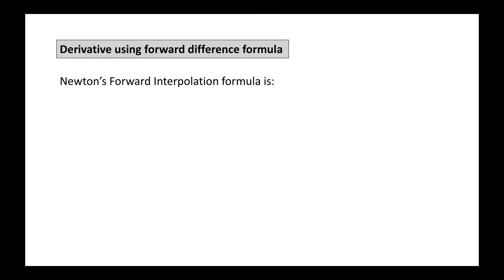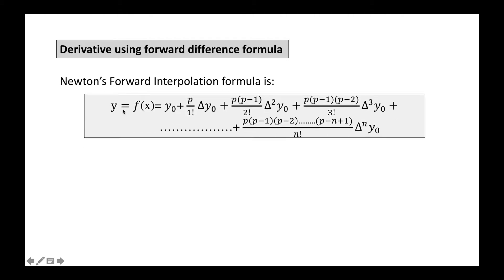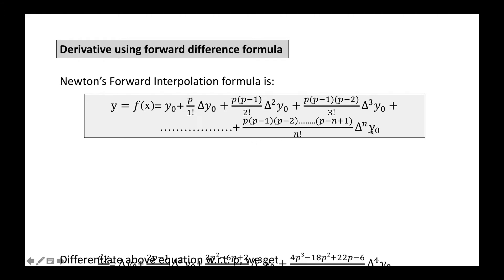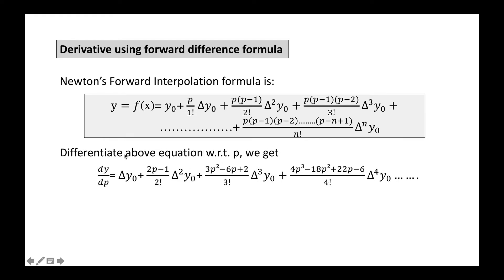Starting with the derivative using the forward difference formula: from Newton's forward interpolation formula, y = f(x) is written as y₀ + (p/1!)Δy₀ + p(p−1)/(2!)Δ²y₀ + higher order terms up to order m. Taking the derivative of this equation with respect to p — since the equation depends on p which further depends on x — we get dy/dp.